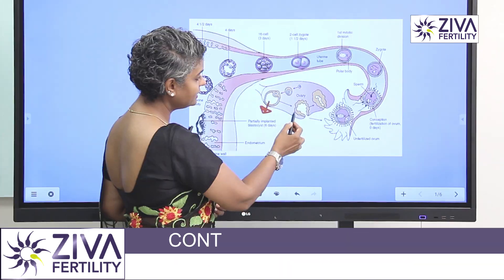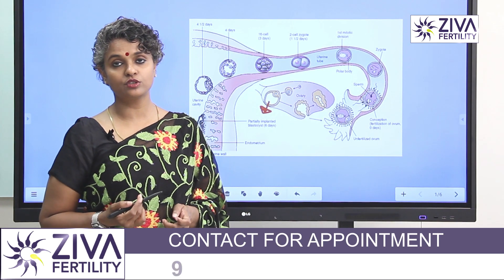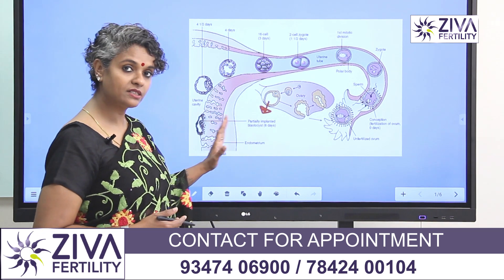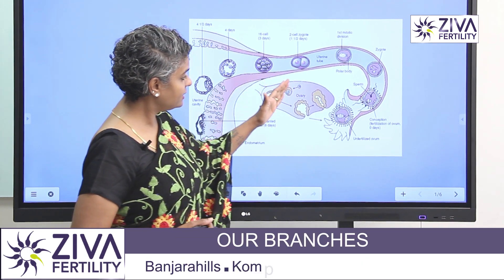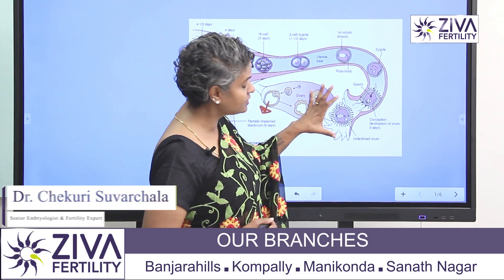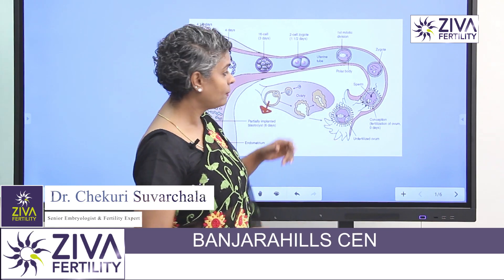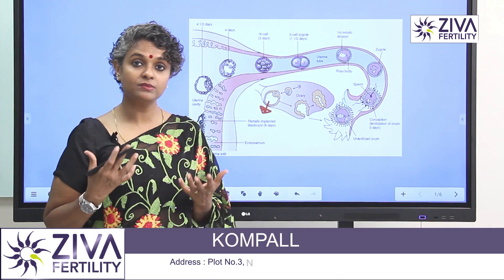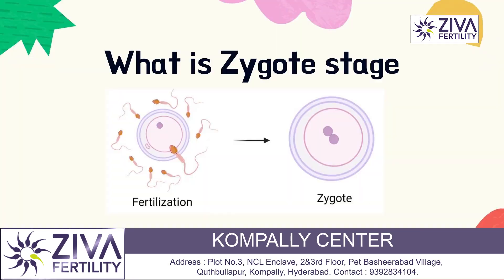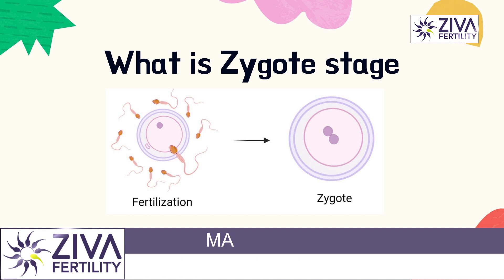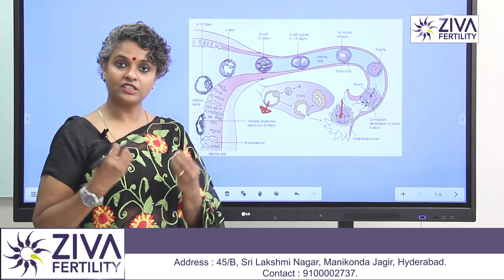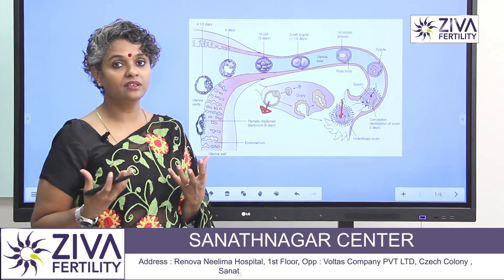Once it is released, the released part also releases progesterone which is very useful for the growth of the endometrium and blood supply into the endometrium. Once the egg is released, it is picked up by the opening of the fallopian tube and waits in the tube for the sperms to arrive. If the sperms are there already, the sperm enters the egg and fertilizes it. This is called the zygote stage — that's when the DNA from the father and the mother exchange and form a unique individual.